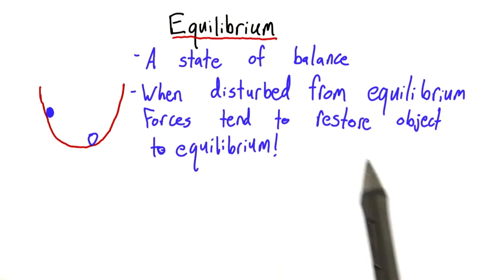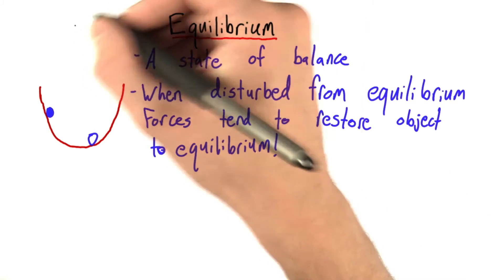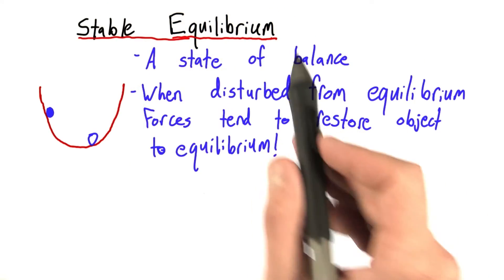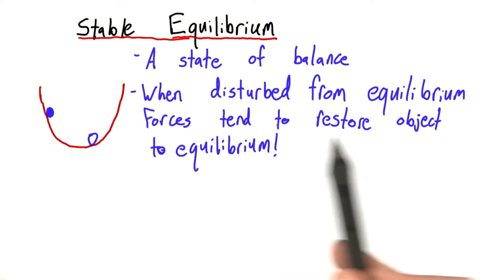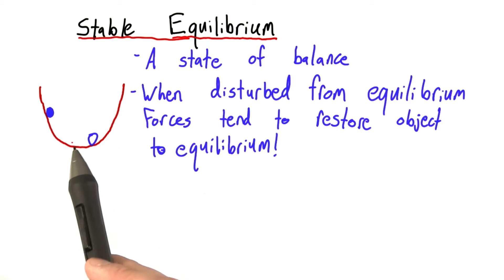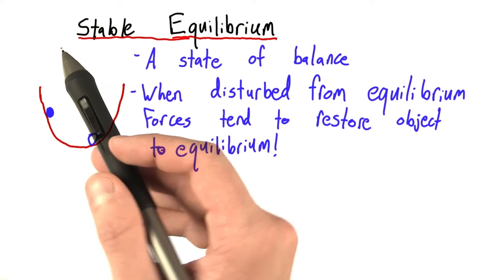And this is such an important concept, I give it its own sentence here. Though if I'm being specific, I should change the title to stable equilibrium. This idea that when disturbed, the object will try to return to equilibrium, that's characteristic of what's known as stable.